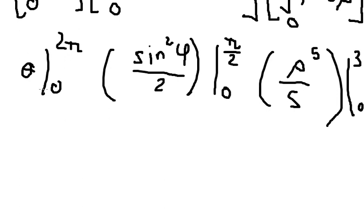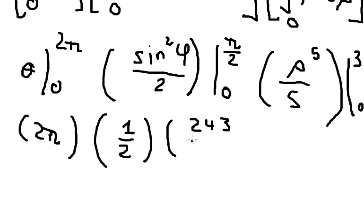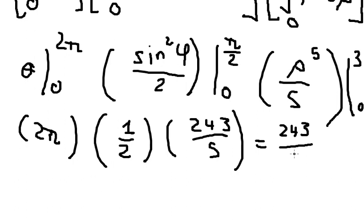Substituting the bounds: for theta we get 2pi, for the phi term we get 1 over 2, and for the rho term we get 243 over 5. Multiplying everything together gives a final answer of 243pi over 5.